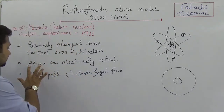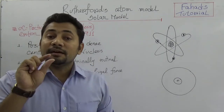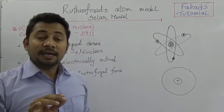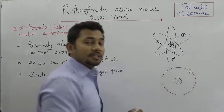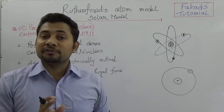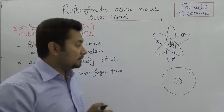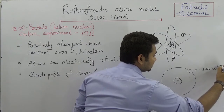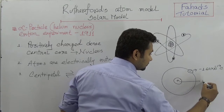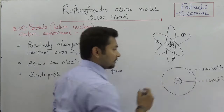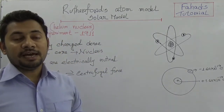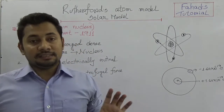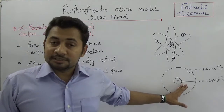Statement number 2 is that atoms are electrically neutral. That means the number of protons, which are positively charged particles inside the nucleus, and the negatively charged electrons around it are equal in number. The charge of an electron is minus 1.60 times 10 to the power of minus 19 coulombs, and the charge of a proton is plus 1.60 times 10 to the power of minus 19 coulombs. Therefore atoms are electrically neutral — the number of electrons in the outer shell equals the number of protons inside the nucleus.